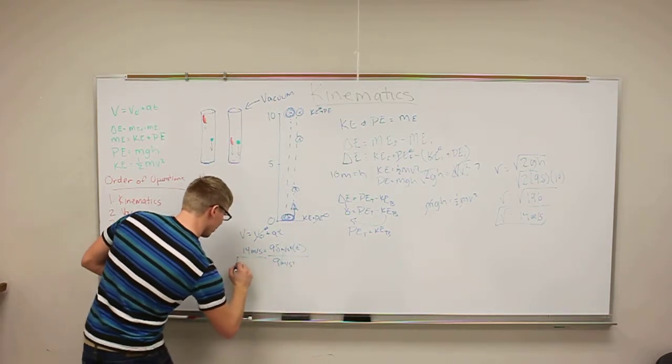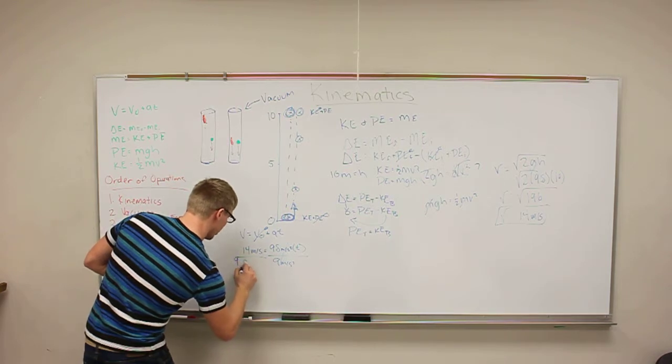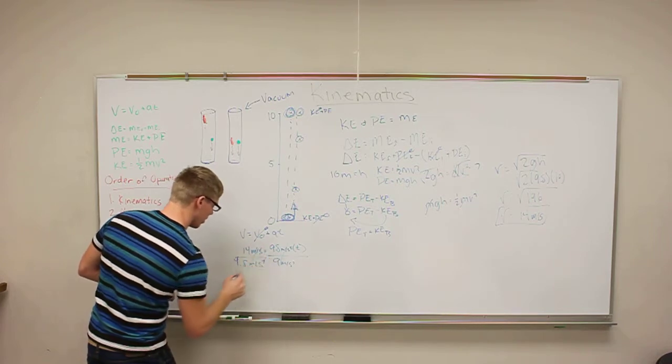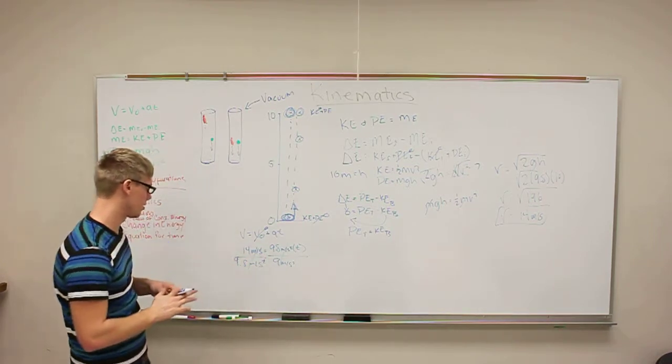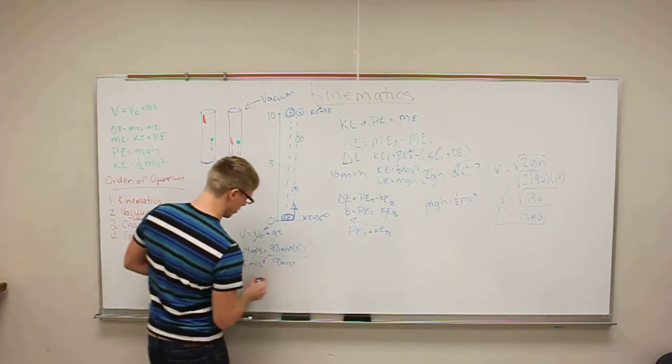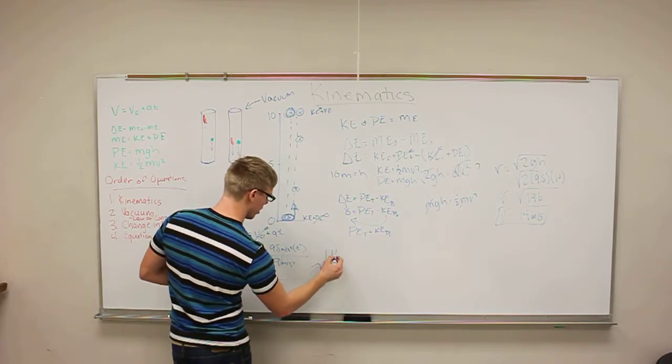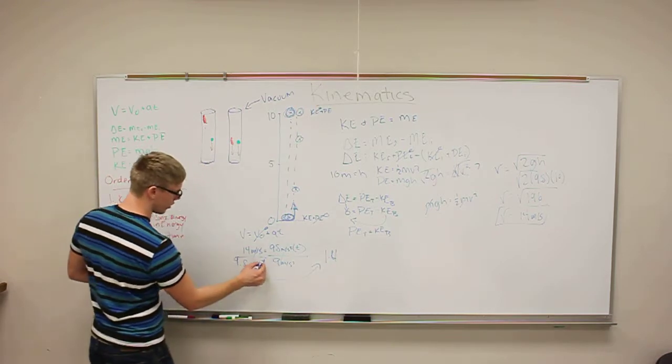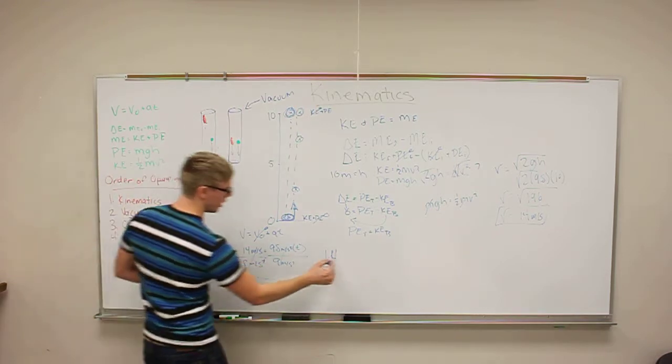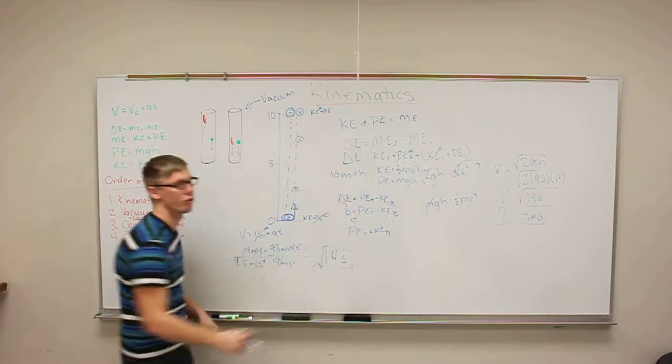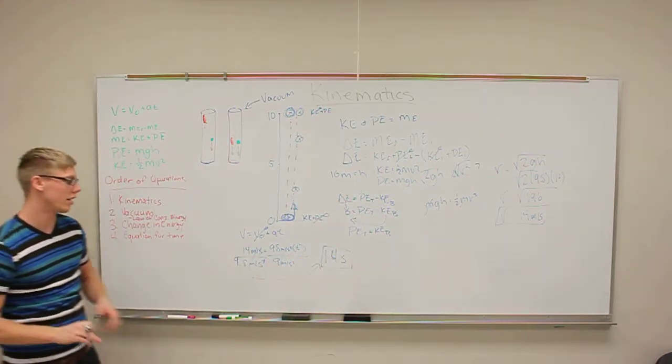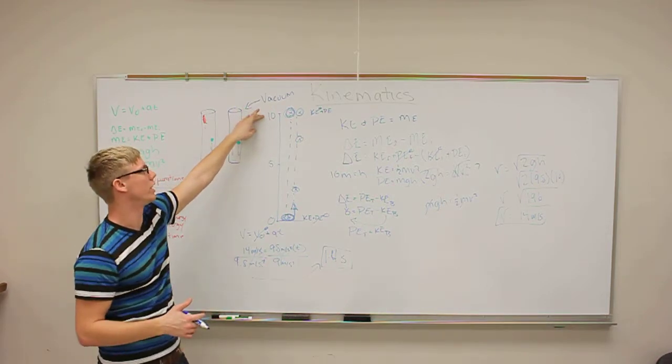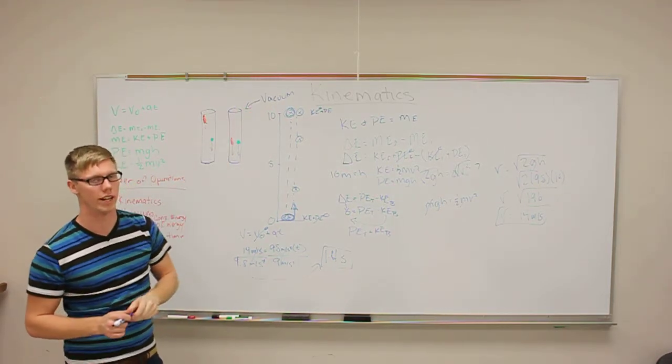If we divide 9.8 meters per second squared, those cancel. You have 9.8 meters per second squared over here, the meters cancel, and one of the seconds cancel. This equals 1.4. And since the seconds is on bottom, under another fraction, it reverses to get 1.4 seconds, and that is how long it takes a ball or any object in that matter to reach zero from 10 meters in the air.